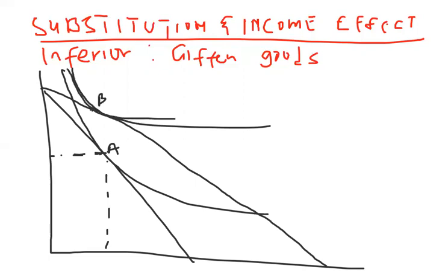At point B we are here now. Just like I did in the previous video, because there's a falling price, our real income has increased — that means we can buy more of X1 and X2. So we have to compensate this consumer by deducting part of the income, reducing it until we reach a point where the utility the person is deriving is the same as before the change in price.